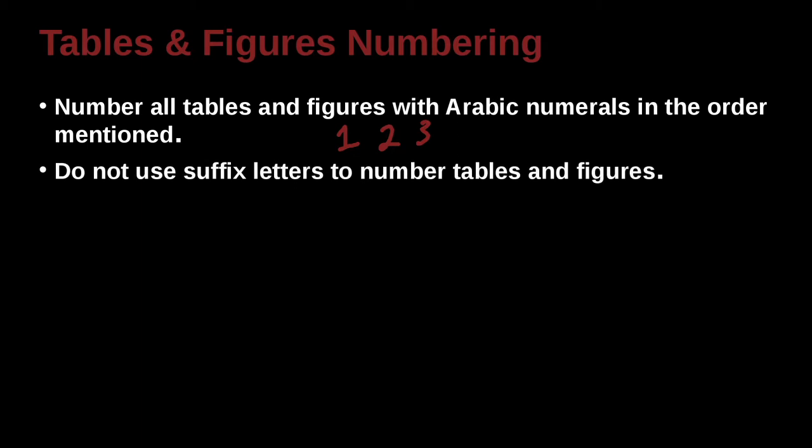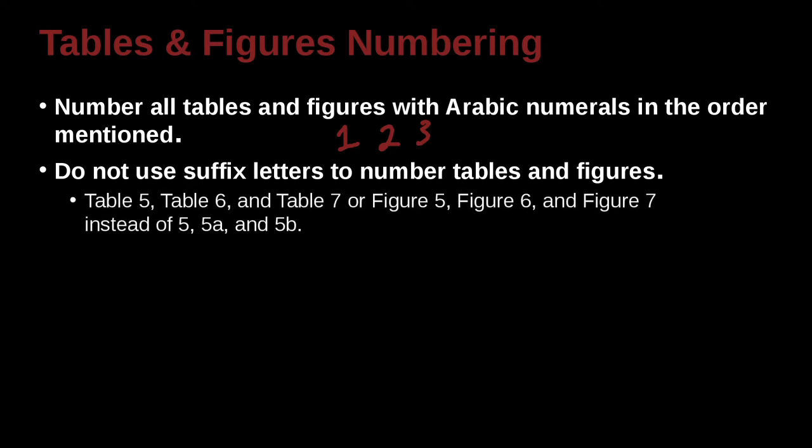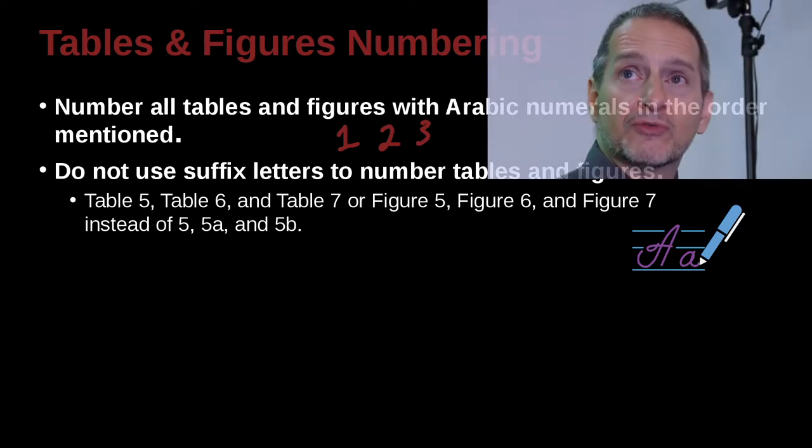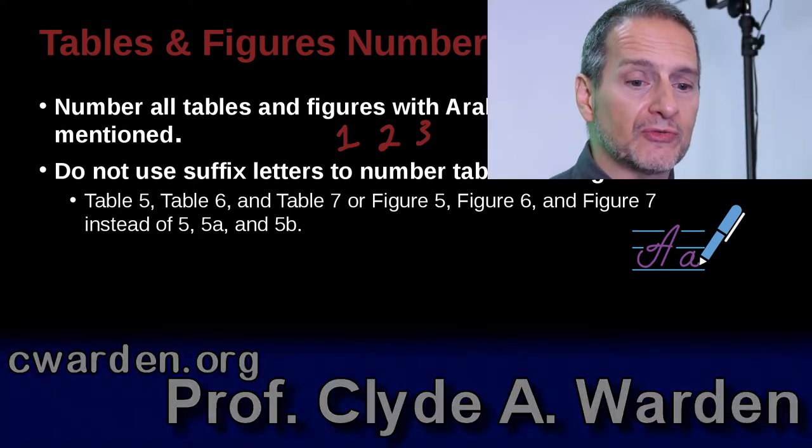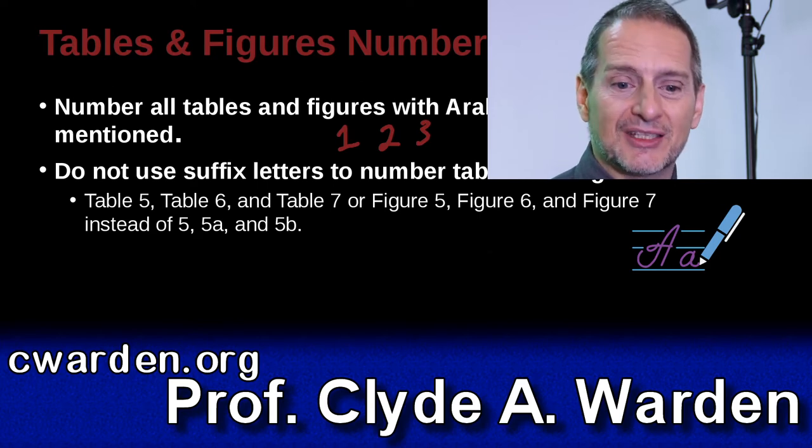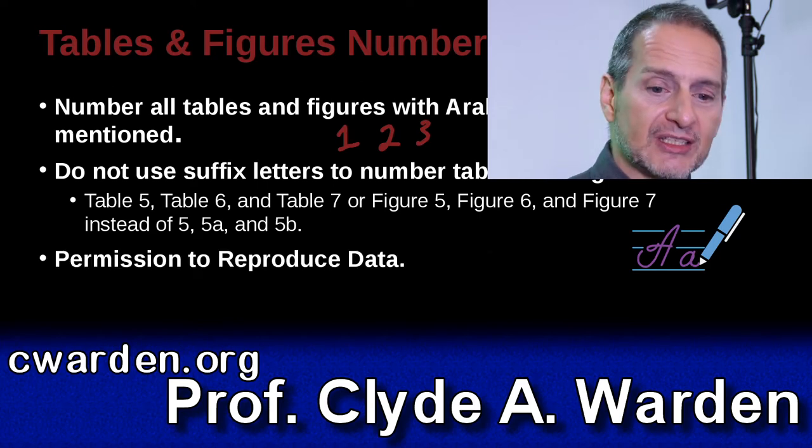When you refer to your tables or when you label them, you do not use a suffix. Instead, you use the number to call them out. For example, see Figure 1, see Figure 2, see Table 3. You don't use fig, you don't use tab. Instead, you write them out with the Arabic number and the full English word: Table 5, Table 6, Table 7, Figure 5, etc.